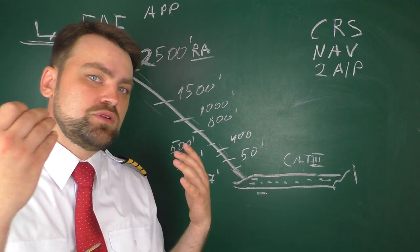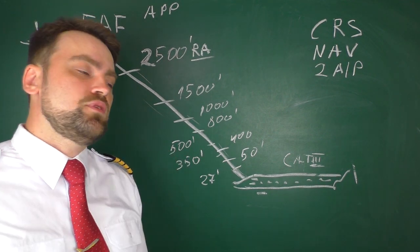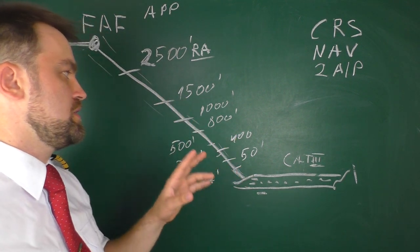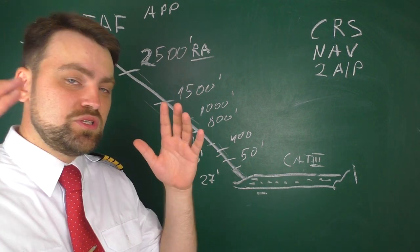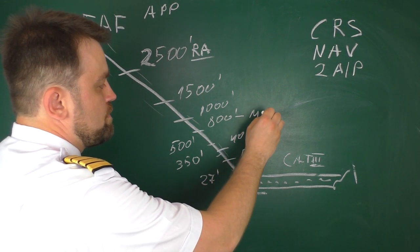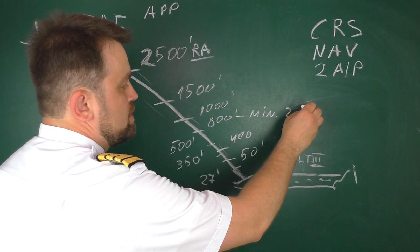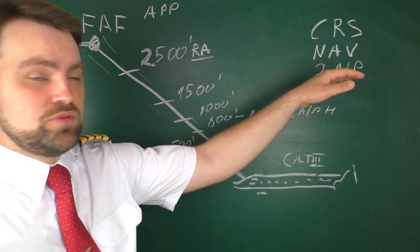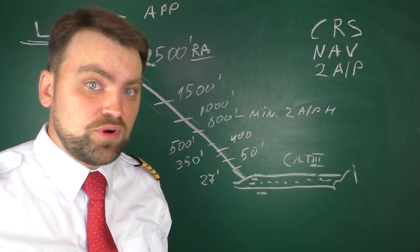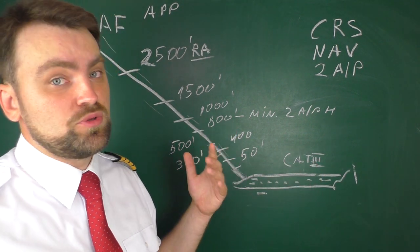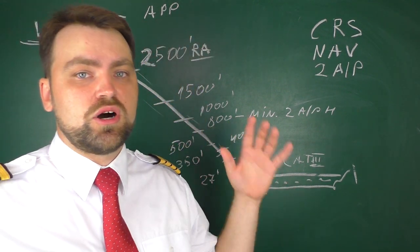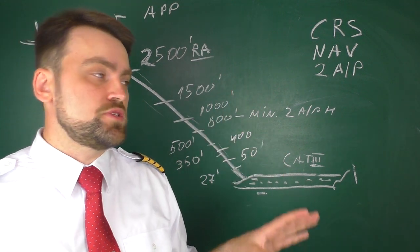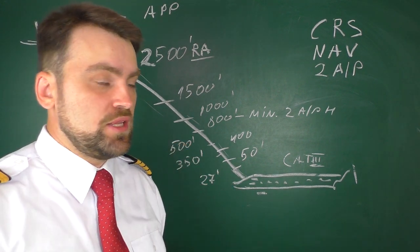Going back to our approach profile: passing 2500 feet on the radio altimeter, the radio altimeter becomes alive and the crew calls 'radio altimeter alive' with the QNH setting. At this point, make sure both autopilots are on, because the latest you can switch them both on is 800 feet. If you pass 800 feet and haven't armed both autopilots for a Category 2 or 3 approach, you must perform a go-around.